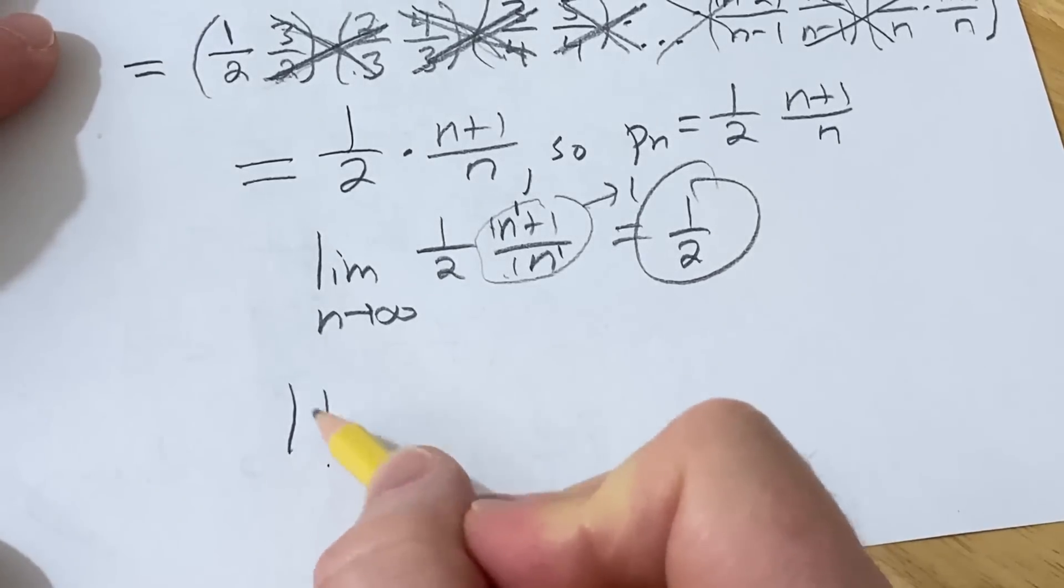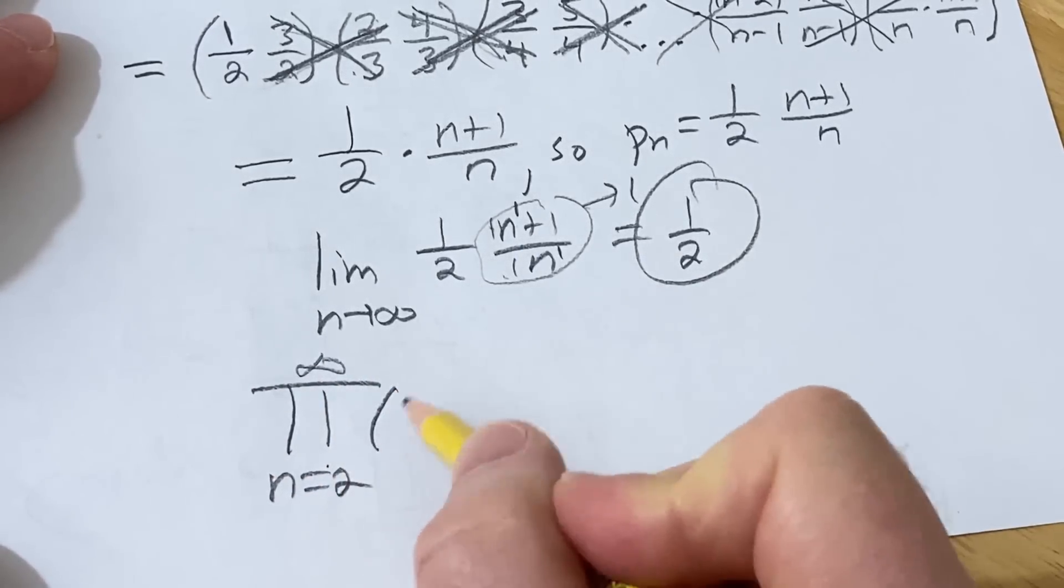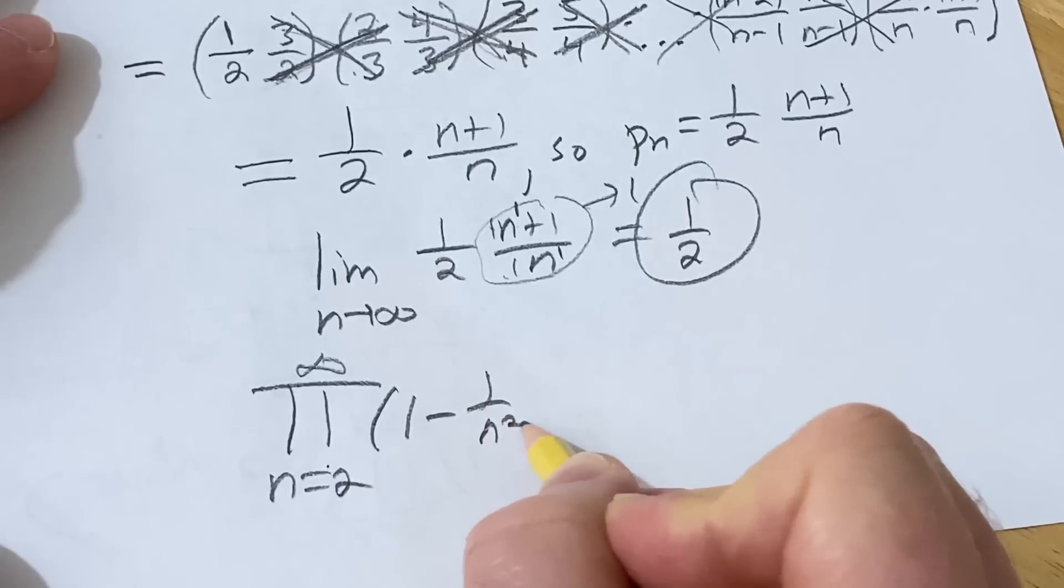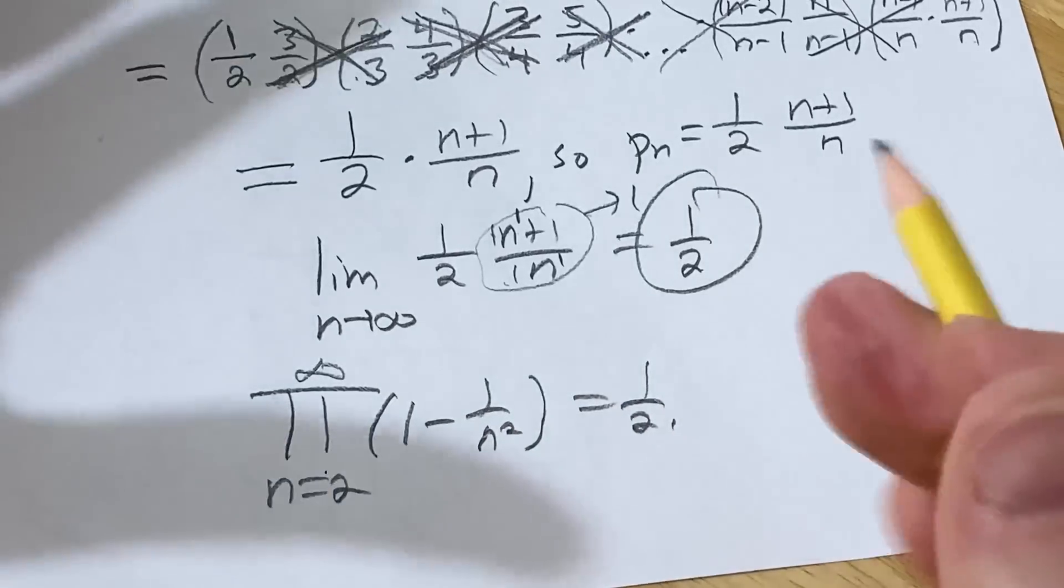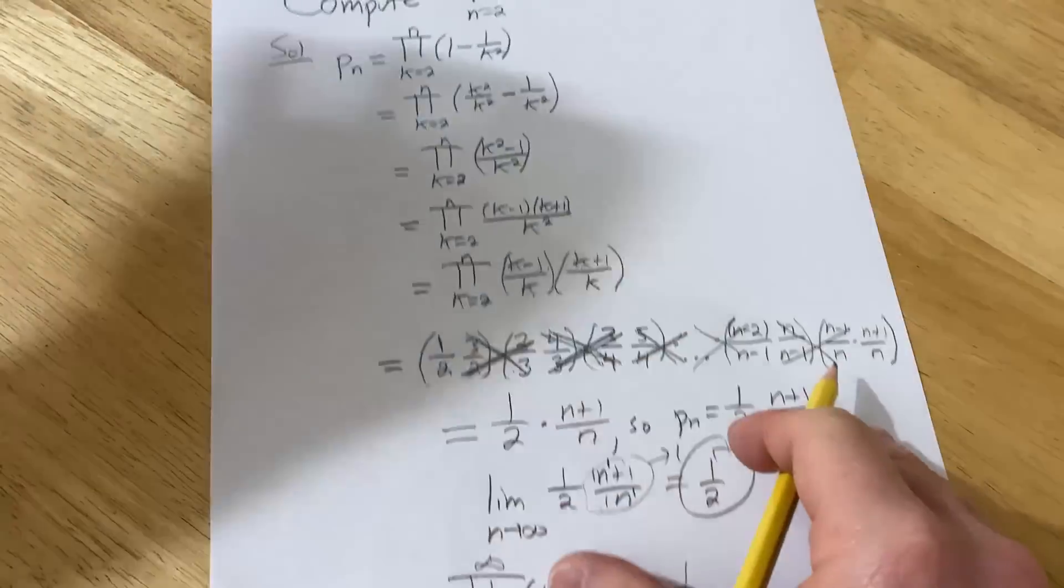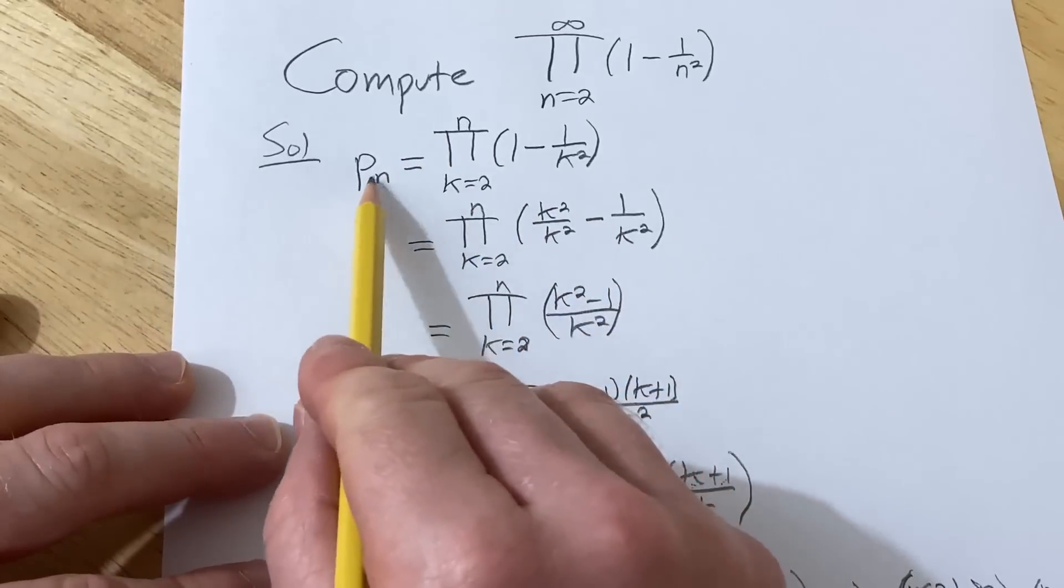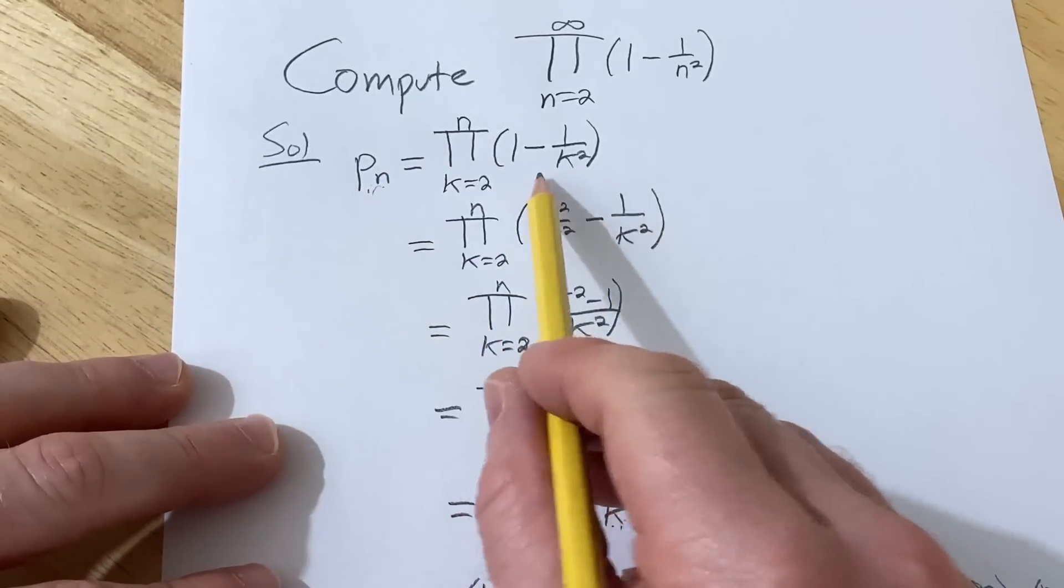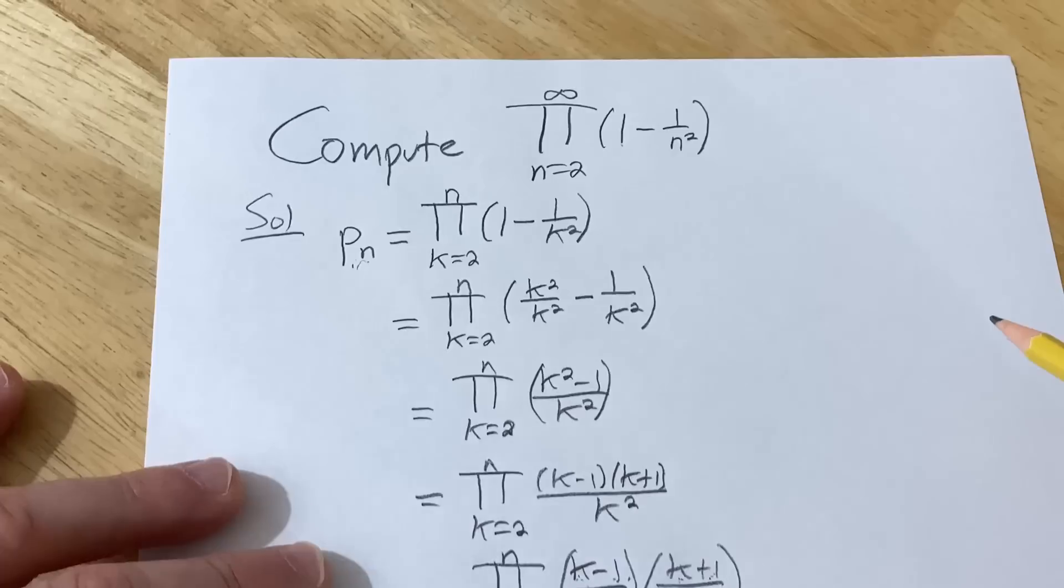So this infinite product π from n equals 2 to infinity of (1 - 1/n²) is equal to one half. So yeah, now you know how to compute an infinite product. So basically, let me zoom back out here so you can see. You just have to first write down the nth partial product and then see if you can find a pattern and take the limit. And if you can do that, that's the answer to the problem.